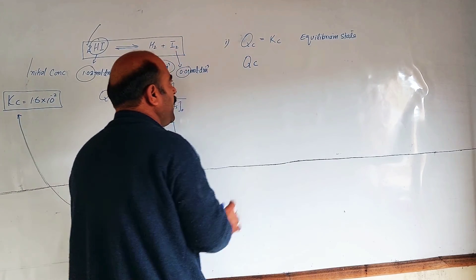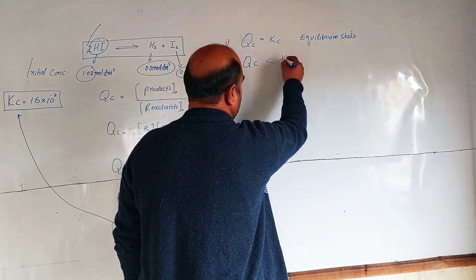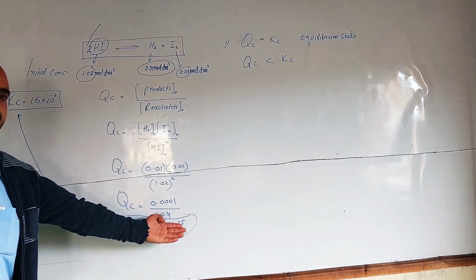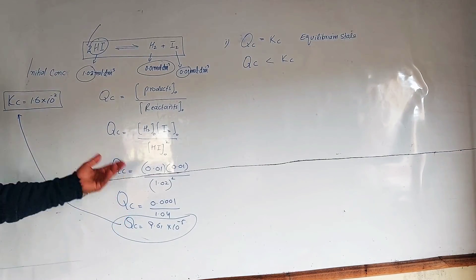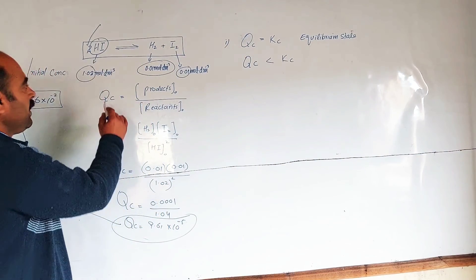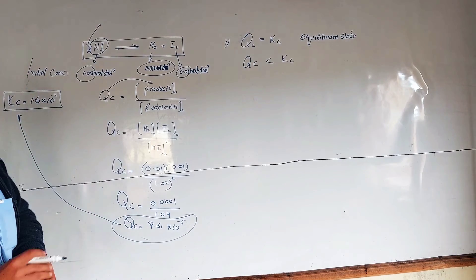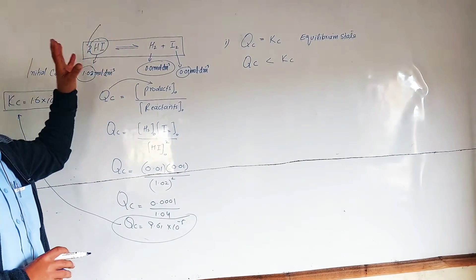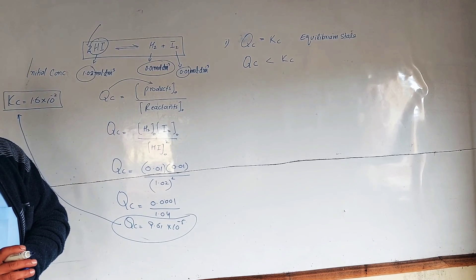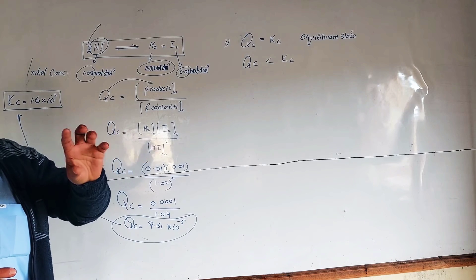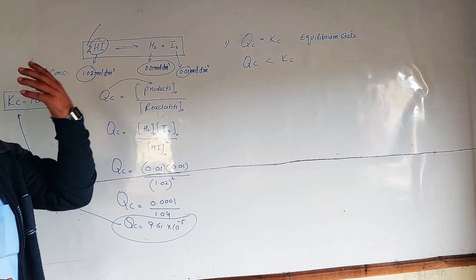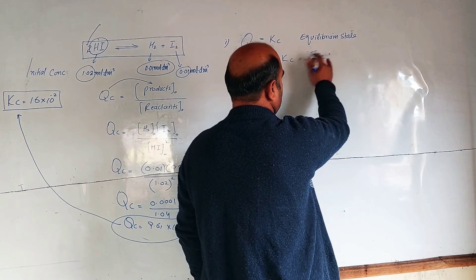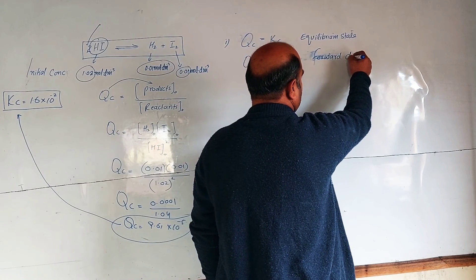The QC value calculated here is 9.61 × 10⁻⁵, which is less than Kc (1.6 × 10⁻²). QC has a direct relation with concentration of products. Since QC is less than Kc, it means the concentration of products is low. The system needs to produce more products, so the reaction proceeds in the forward direction. The system is proceeding in the forward direction.